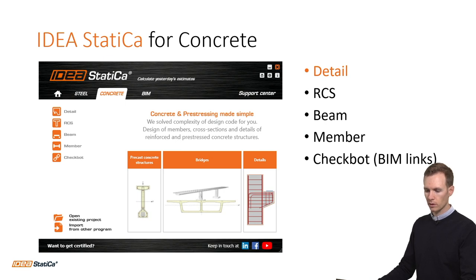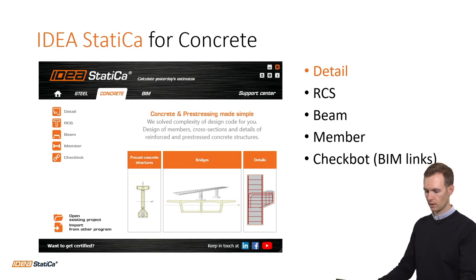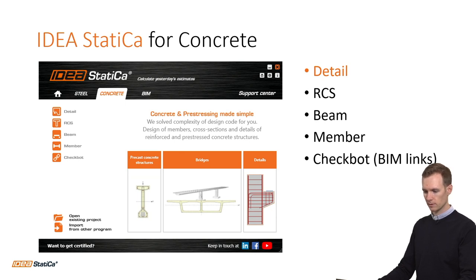There is also a module called RCS, which helps with reinforced concrete sections, pre-stressed cross-sections, composite or staged cross-sections, and 2D elements such as slabs, walls and shells. Additionally, there is the Beam and Member module, for a complete design report of pre-stressed concrete beams, reinforced concrete members, beams with openings, general shape frames and slender members.